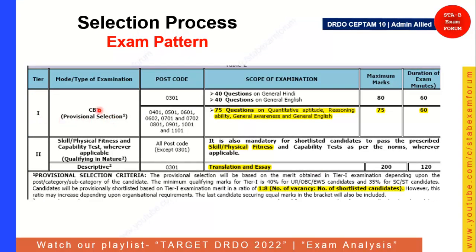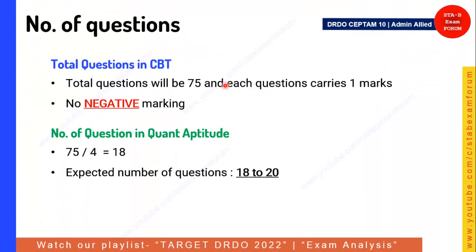This is the selection process where the first tier will be a CBT — computer-based test. For most post codes there will be 75 questions, each question carries one mark, and the duration of the exam is 60 minutes. There will be no negative marking. There are four sections, and we are covering the syllabus for each section based on our past exam experience. With 75 questions divided across 4 sections, we can expect 18 to 20 questions for quantitative aptitude.